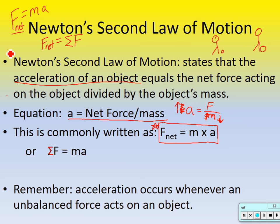Remember: acceleration occurs whenever an unbalanced force acts on an object. For example, this marker sitting on the counter — the forces are balanced, it's just sitting there. But if I put a net force on it, the forces become unbalanced and the marker will accelerate and move. That's how all movement happens.